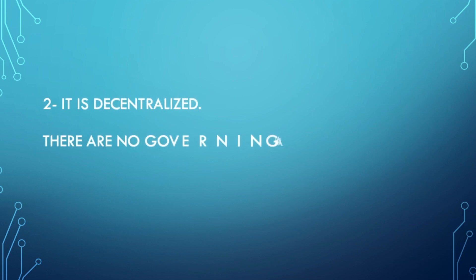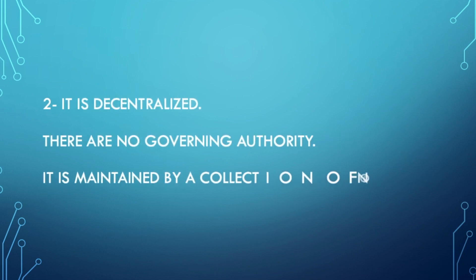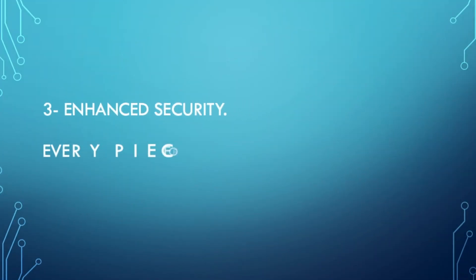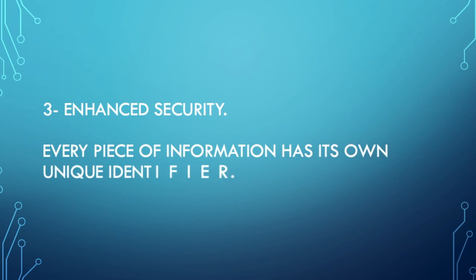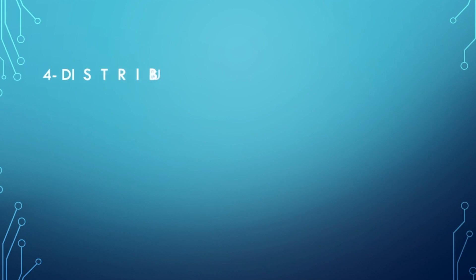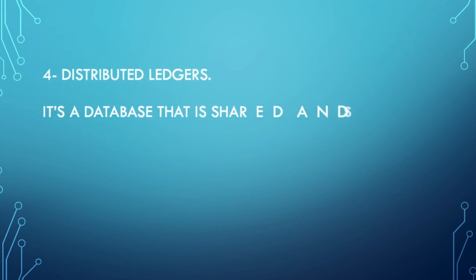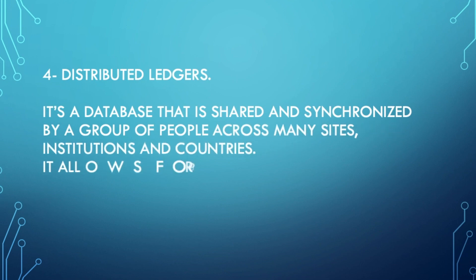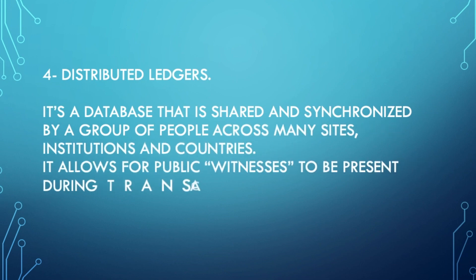Two — it is decentralized. There are no governing authorities; it is maintained by a collection of nodes. Three — it has enhanced security. Every piece of information has its own unique identifier. Four — it has distributed ledgers. It is a database that is shared and synchronized by a group of people across many sites, institutions, and countries, and it allows for public witnesses to be present during transactions.